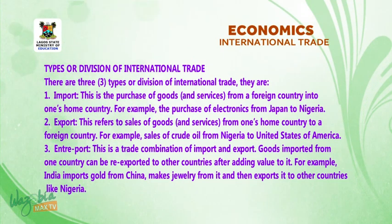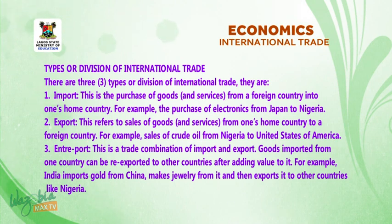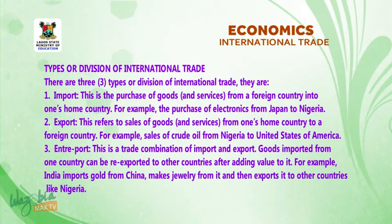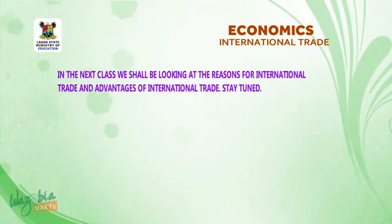3. Entrepôt — this is a trade combination of imports and exports. Goods imported into one's home country can be re-exported to other countries after adding value to it. For example, India imports gold from China, makes jewelry from it, and then exports it to countries like Nigeria.